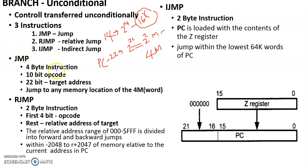JMP is a 4-byte instruction. The first 10 bits of the instruction represent the operation code and the remaining 22 bits represent the target address — the location to which control is transferred. This allows access to the complete 4 million memory locations.